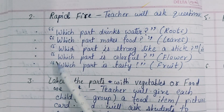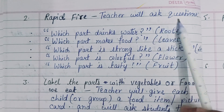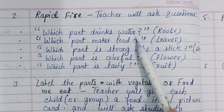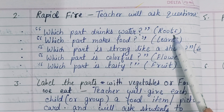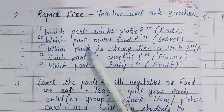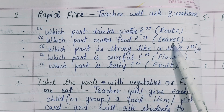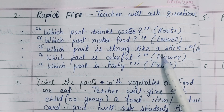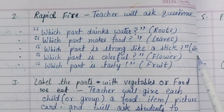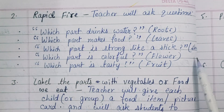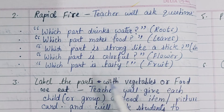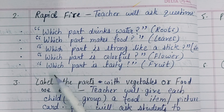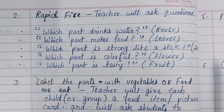Next activity: Rapid fire. Ask questions like — which part drinks water? Roots. Which part makes food? Leaves. Which part is strong like a stick? Stem. Which part is colorful? Flower. Which part is tasty? Fruit.